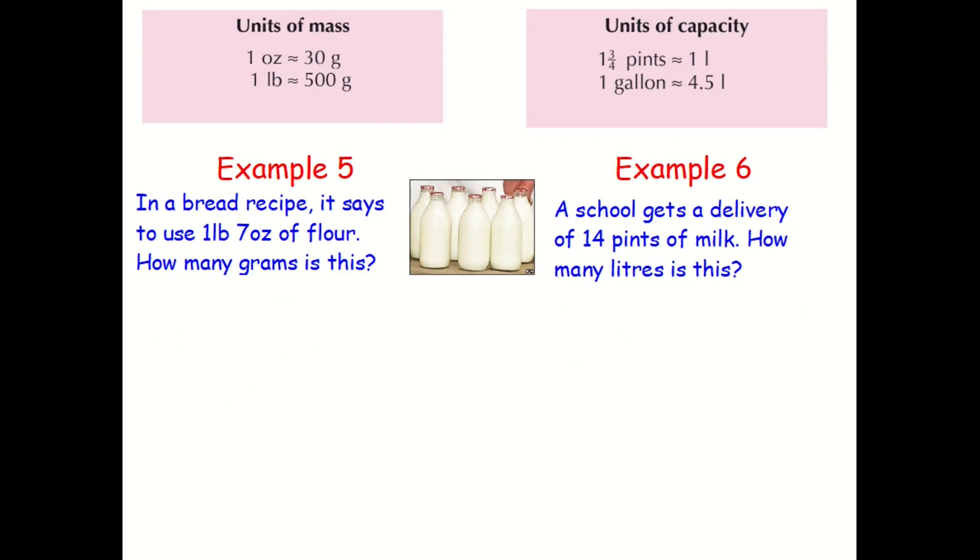So, example 5. In a bread recipe, it says to use one pound, seven ounces of flour. How many grams is this? Just a reminder that LB, you say as pounds, but pounds in this sense is a unit of mass, not the pound that we know as the currency. So I'm going to quote the conversion. But actually, before I do that, I'm just going to take this bit away because one pound, I can see here, is equal to 500 grams. So I'm not even going to do that bit of the question.